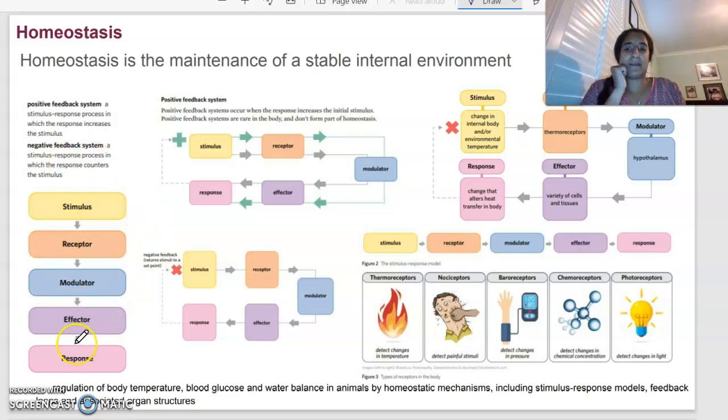So every feedback mechanism is going to have a stimulus. So a stimulus is something that is going to initiate some sort of change. The receptor is what's going to detect that change. The modulator is going to understand what that change is. And the effector is what's going to carry out that change. And the response is the response, what happens as a result. So in terms of our feedback loops, if we're going directly stimulus, receptor, modulator, effector, response, that's positive feedback. When we return back to a set point, that's what we're calling a negative feedback loop because it's going to loop back to the beginning.